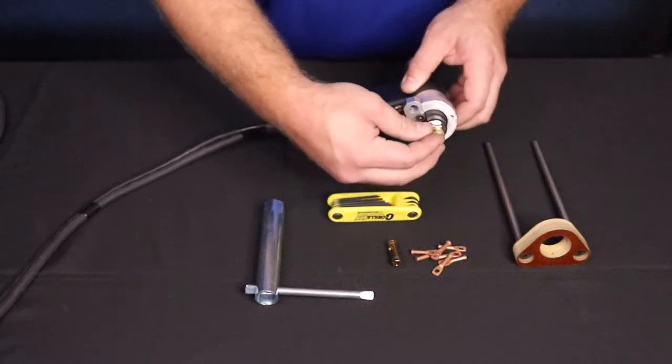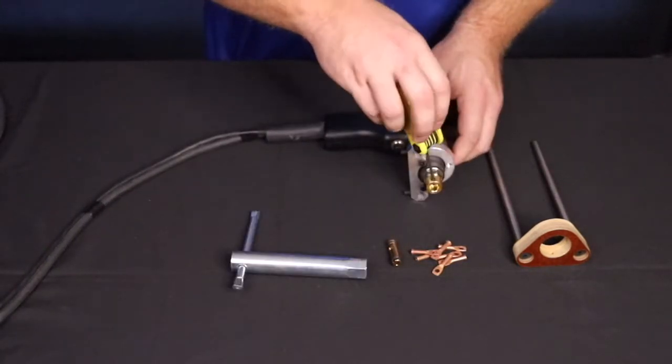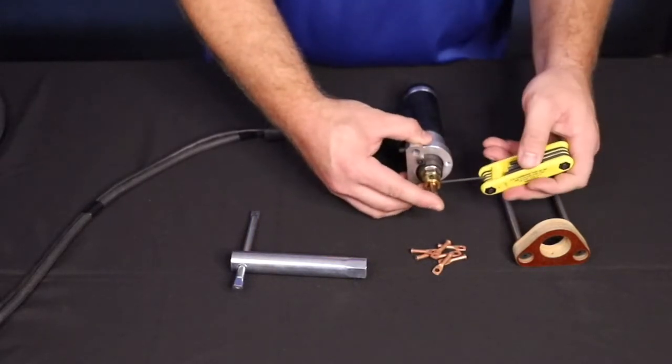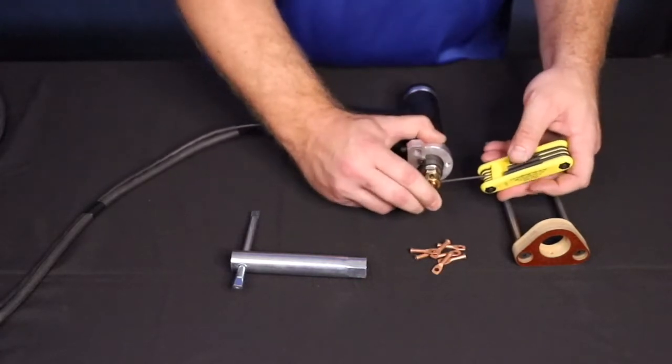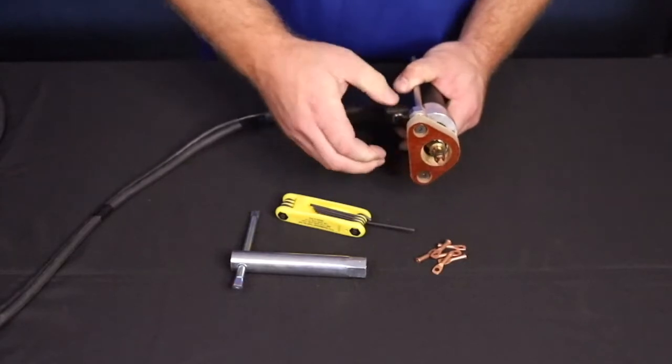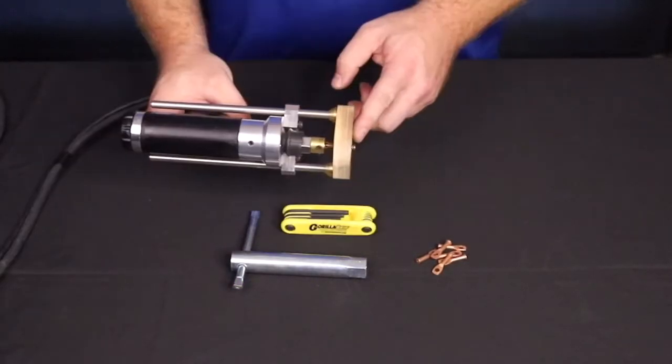To set the gun up for acoustical pins, install the Euro to B collet adapter. Then, install the acoustical pin B collet, which is specially designed for the application. Next, install the foot piece assembly. Insert the acoustical pin into the collet and adjust the foot piece assembly to achieve 1/8th to 3/16th of an inch of pin stick out.